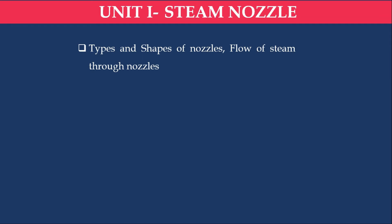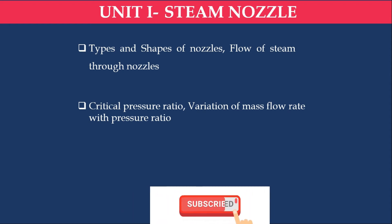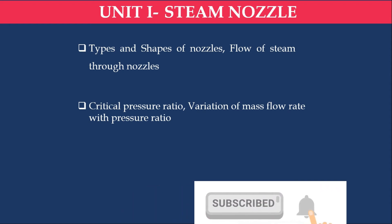A nozzle can be used anywhere — in perfume bottles, cleaners, steam power plants, and more. Importantly, we will study the flow of steam through the nozzle. We will also study the critical pressure ratio when we analyze a convergent-divergent nozzle: P2/P1 or P3/P2. We will also analyze the maximum mass flow rate at the critical pressure ratio.